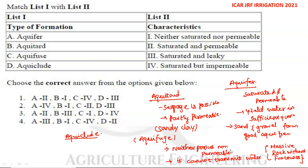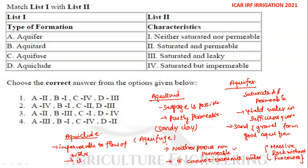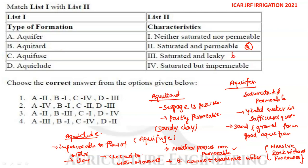An aquifuge is neither porous nor permeable and cannot transmit water. The best example is massive rocks without fractures, which are impermeable to flow of water. Matching: aquifer is saturated and permeable; aquitard is saturated and leaky; aquifuge is neither saturated nor permeable. Option 3 is the correct answer.